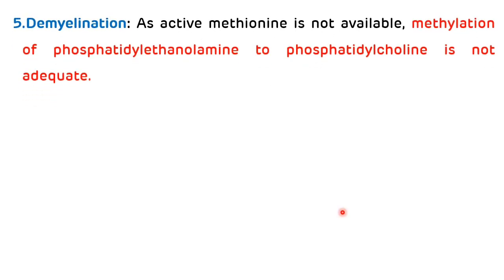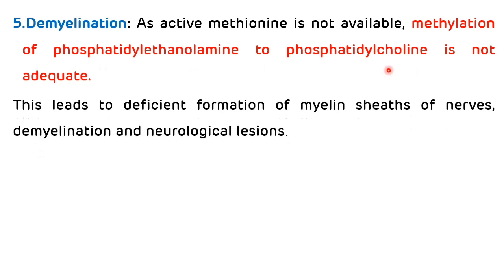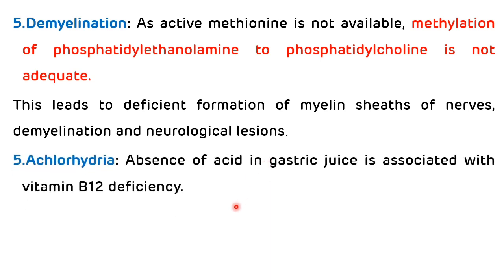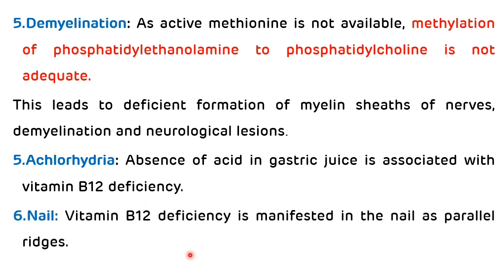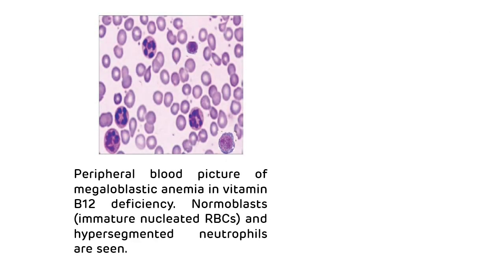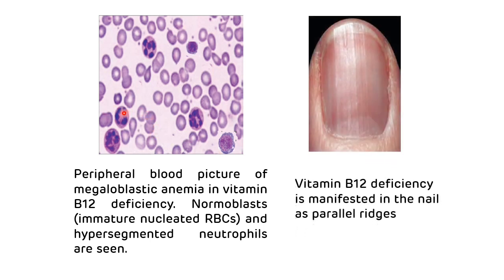Another deficiency manifestation is demyelination. As active methionine is not available, methylation of phosphatidylethanolamine to phosphatidylcholine is not adequate, leading to deficient formation of myelin, demyelination, and neurological lesions. Fifth deficiency manifestation is achlorhydria — absence of acid in gastric juice is associated with vitamin B12 deficiency. Sixth manifestation is seen in the nails — vitamin B12 deficiency is manifested in the nails as parallel ridges. The peripheral smear shows megaloblastic anemia with normoblasts (immature RBCs) and hypersegmented neutrophils.